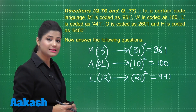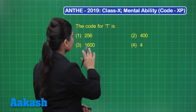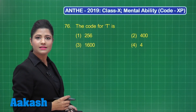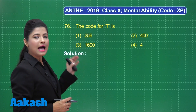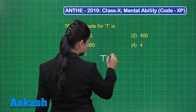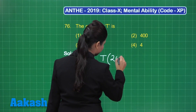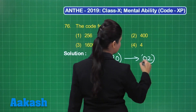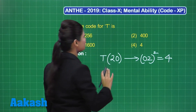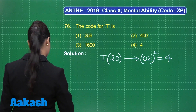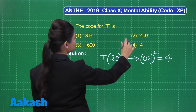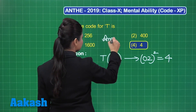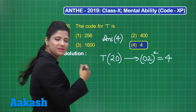For question 76, the code 40 is asked. T is at alphabet position 20; reversing gives 02, and 02 squared = 4. So the code 40 corresponds to the value 4. Out of the options, option number 4 gives the correct answer of 4. So the answer is option 4.